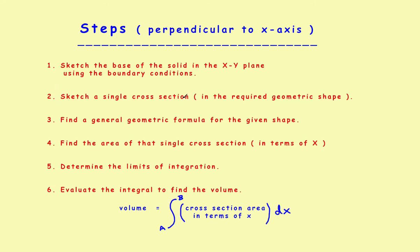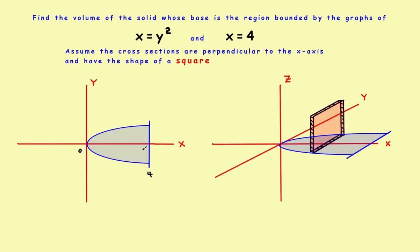Step two: sketch a single cross-section in the required geometric shape. Come in some distance x, draw a vertical baseline. Then draw the square — go up, across, and back down for a rough sketch. Give it a little thickness to represent DX. That's one representative square cross-section of the object.